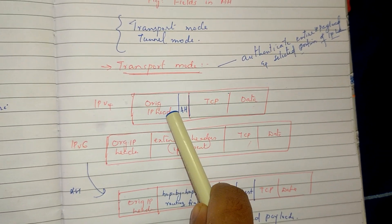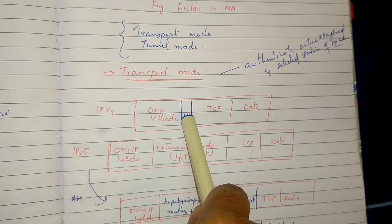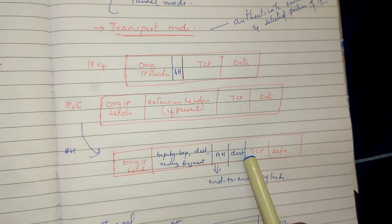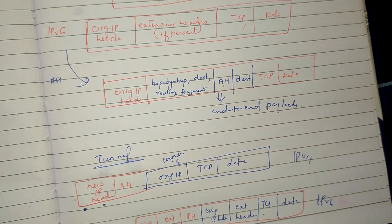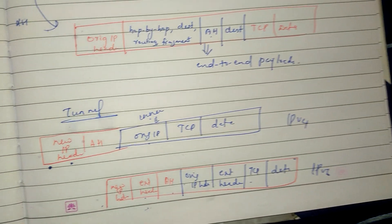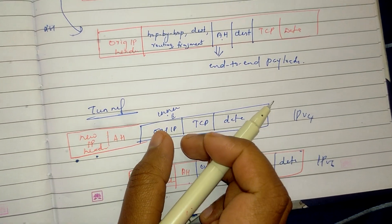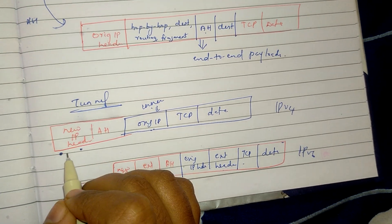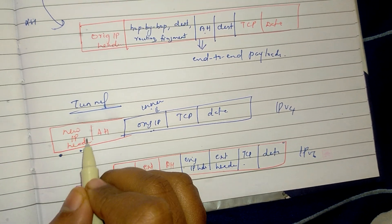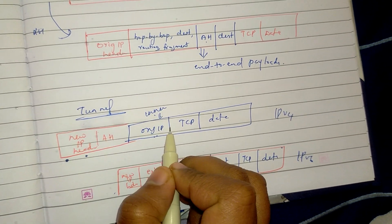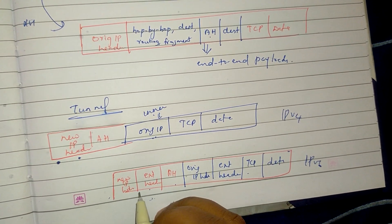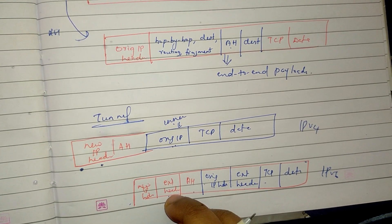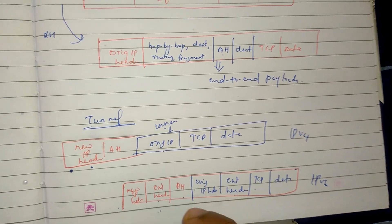We have an authentication header for IPv4 and for the original IP header. In tunnel mode, the AH is inserted in between the new IP header (the outer IP header, which is the security gateway header) and the original IP header. There is a new IP address — source and destination address. In IPv6, the authentication header appears with the original IP address and extension headers.